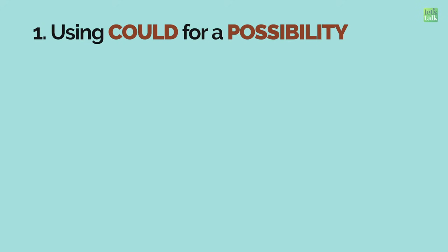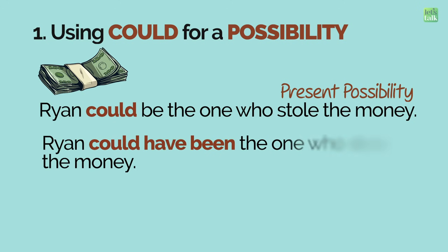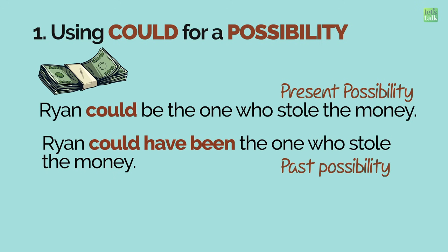First, let's look at using could to talk about a possibility. 'Ryan could be the one who stole the money' — this sentence is in the present tense; it is possible that Ryan stole the money. 'Ryan could have been the one who stole the money' — now we are expressing the same possibility in the past tense. Notice the change in the verbs after could: we have added 'have' and 'been'. Whenever you want to talk about a past possibility using could, could is followed by have and been — could have been.